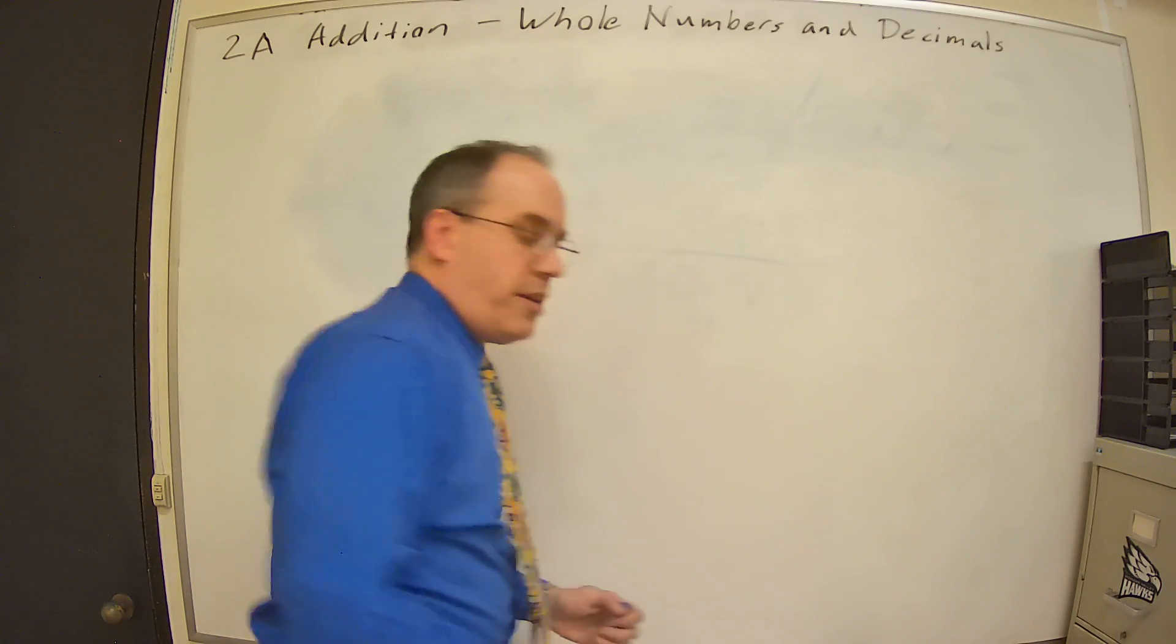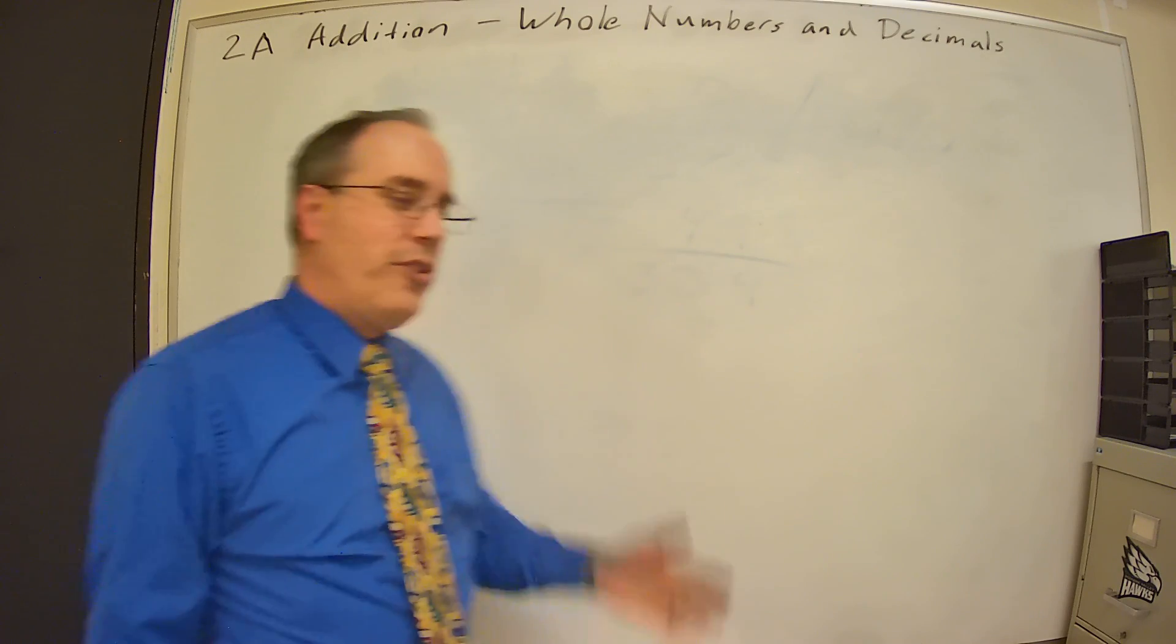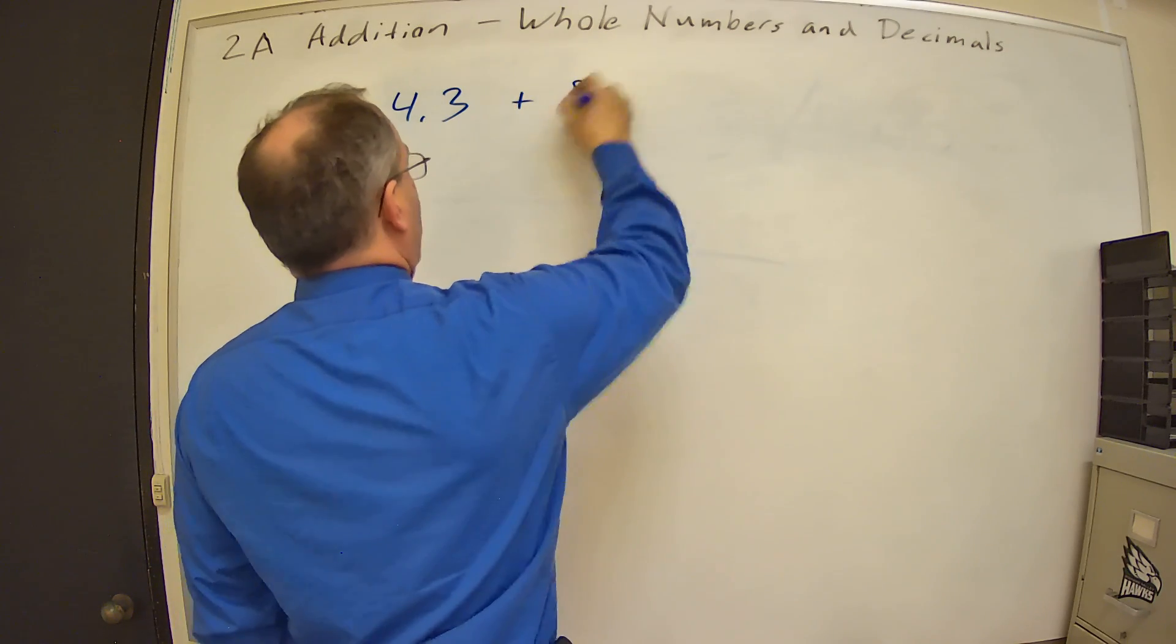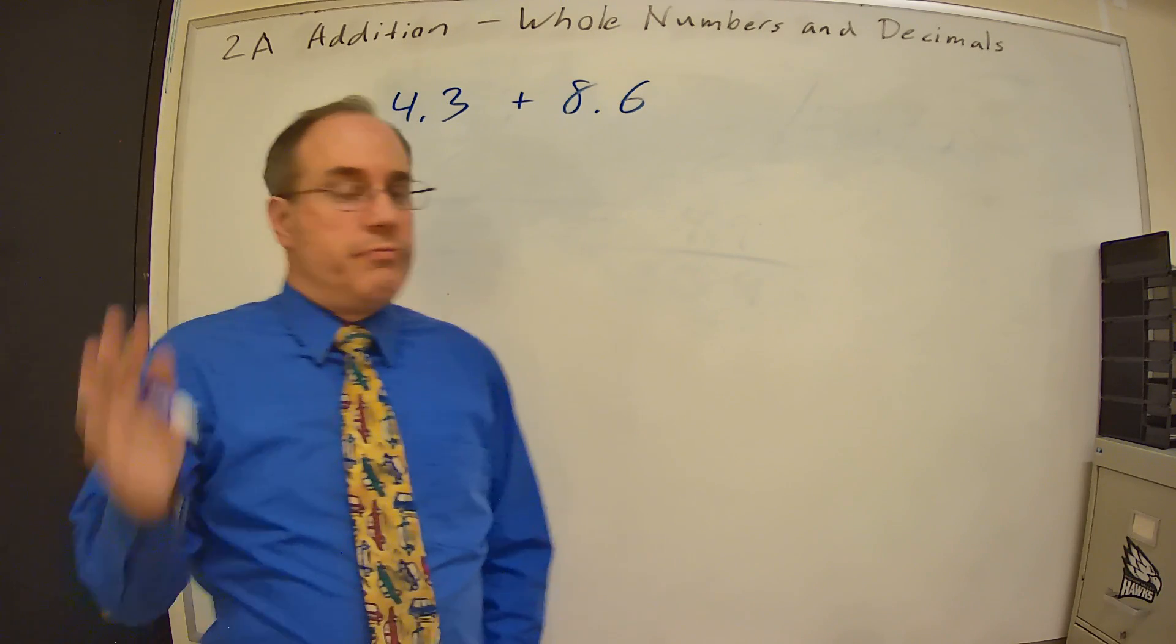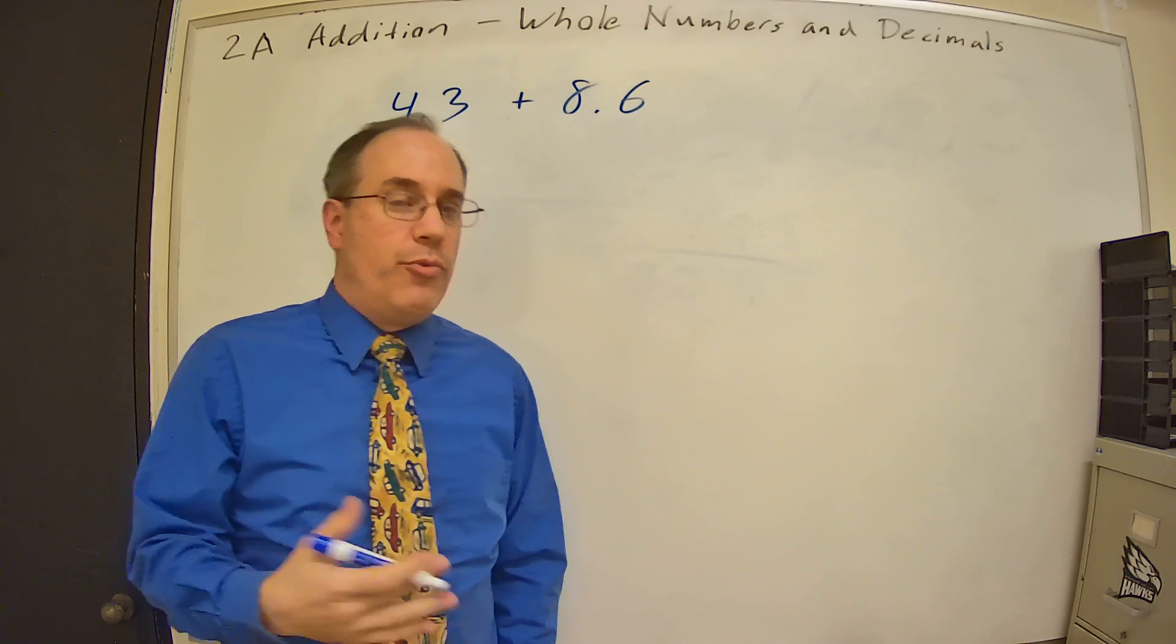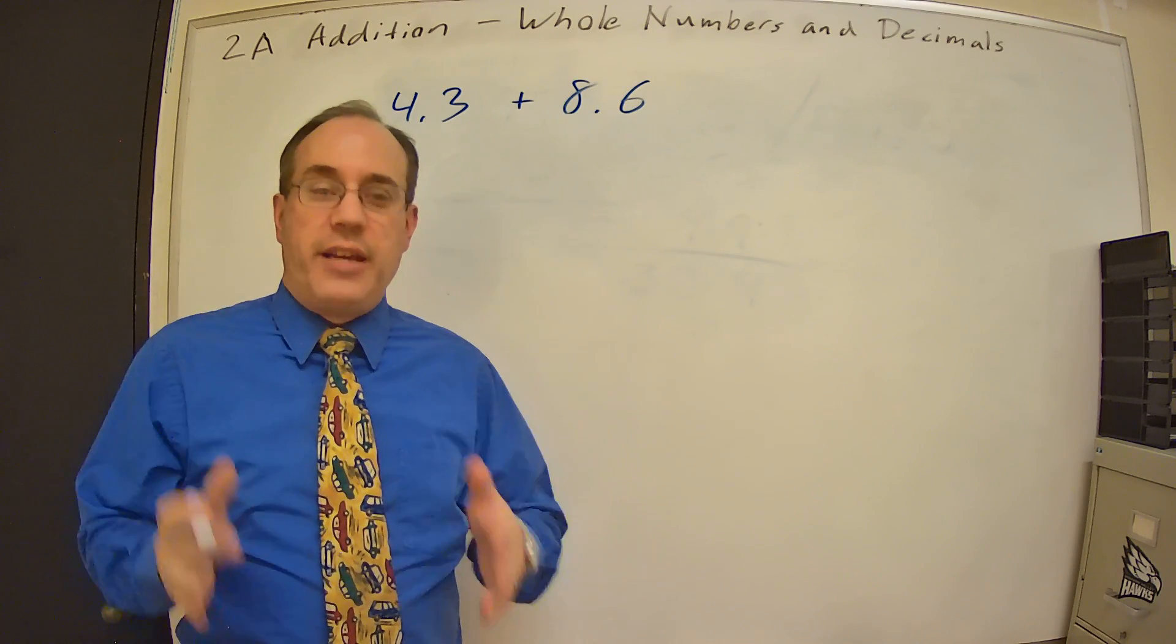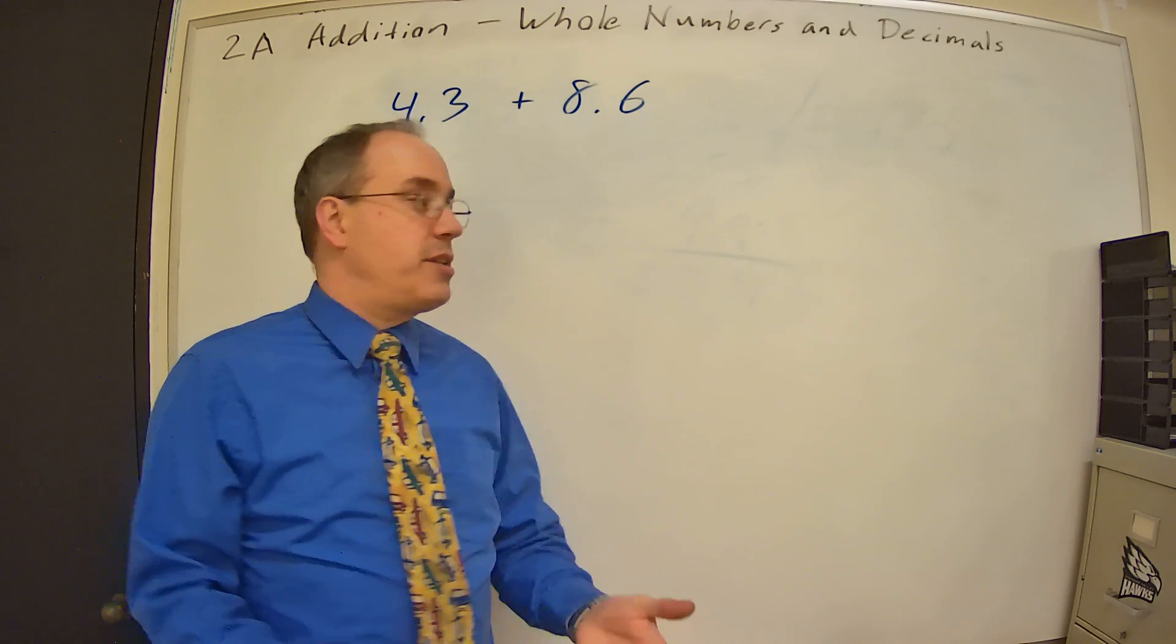Well, how does that change if we go to decimal numbers? Whole numbers, that was pretty straightforward. But what if I had something like this? 4.3 plus 8.6. Well, to be perfectly honest, adding decimal numbers really isn't any different than adding whole numbers. Yes, there's a decimal point in there, but it's still a matter of lining up the place values and adding. The decimal point will stay where it stays.